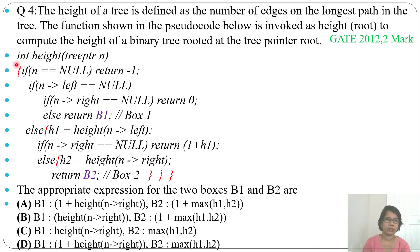The pseudocode is: int height(tree pointer n). If n equals null, return minus one — meaning if n doesn't contain any value, return minus one. Then if n.left equals null, meaning there is no left child, and if n.right equals null, return zero.